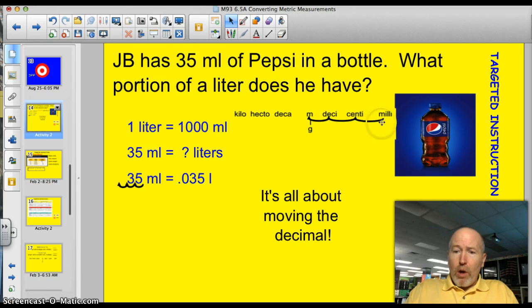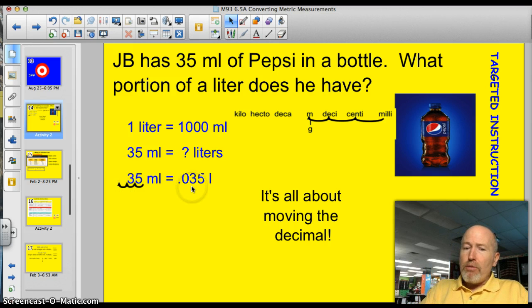So, we go 1, 2, 3 spots to the left because we're going from a smaller unit to a larger unit. So, we're going to divide. And if we do that, we do 3 spots on our decimal, move it 3 places. 1, 2, 3, just like that. We have 0.035 liters.